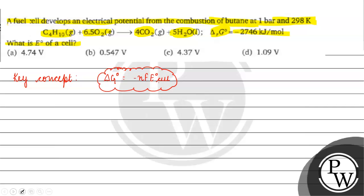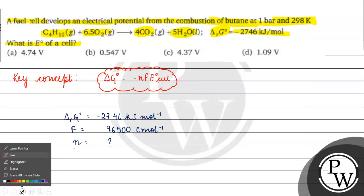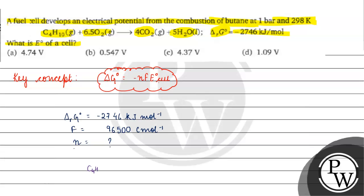We need to find E⁰. Delta G is given as minus 2746 kilojoules per mole. F equals 96,500 coulombs per mole. We need to find the value of n. For the given reaction, we have C₄H₁₀ plus 13/2 moles of oxygen gives us four carbon dioxide molecules and five water molecules.